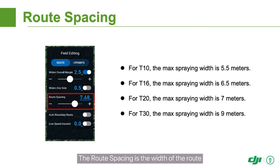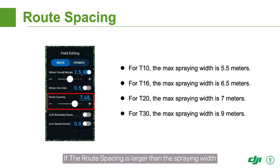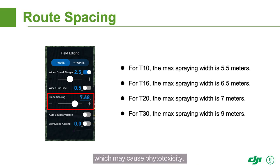The route spacing is the width of the route — that is, the distance that the agri-drone moves laterally. The route spacing should be set to match the spraying width of the drone. If the route spacing is larger than the spraying width, some areas will not be sprayed. If the route spacing is smaller than the spraying width, some areas will be sprayed multiple times, which may cause phytotoxicity.